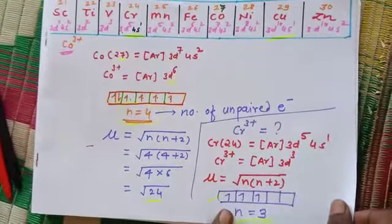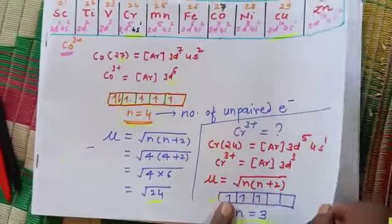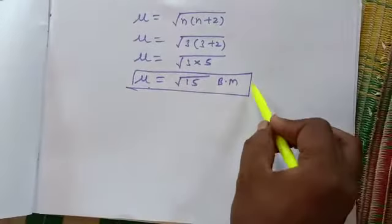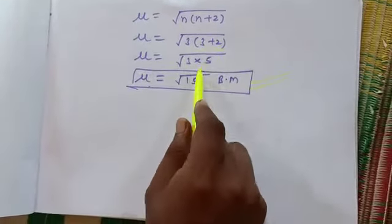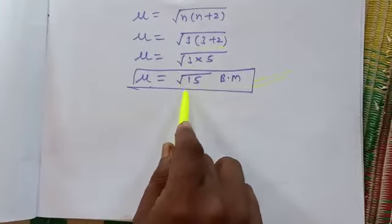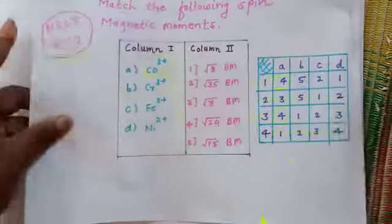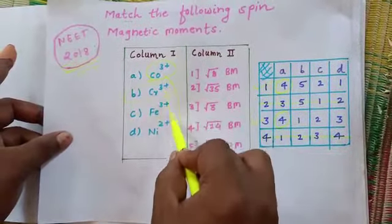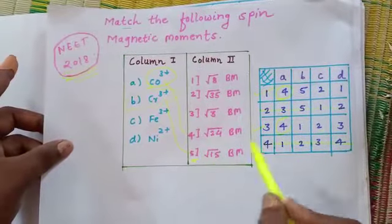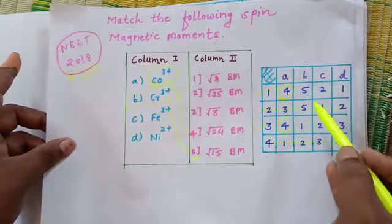So here square root of n bracket n plus 2, n equals 3. According to Hund's rule, fill up here, pairing won't happen. So what you get: 3 bracket 3 plus 2, that is 3 into 5, that is 15. So square root of 15 means option number 5.